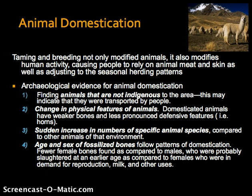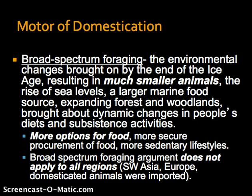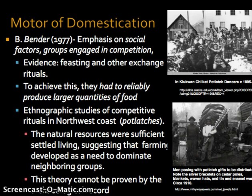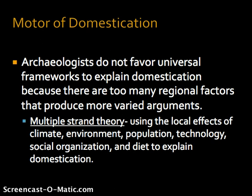What were the driving forces behind domestication? There are two main theories. The broad-spectrum foraging theory stresses environmental change brought on by the end of the last ice age, resulting in much smaller animals and more food options, though it does not apply to all regions. The other major idea involves social factors — Bender's work looking at feasting, potlatching, and ritual competitive gastronomic events where large quantities of goods were assembled and distributed. Overall, archaeologists do not favor a universal framework, favoring instead a multiple strand theory which uses local effects of climate, environment, population, technology, social organization, and diet to explain domestication.